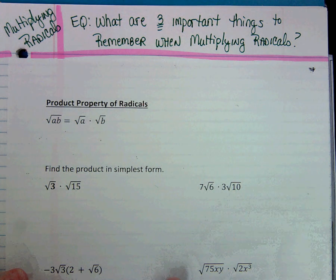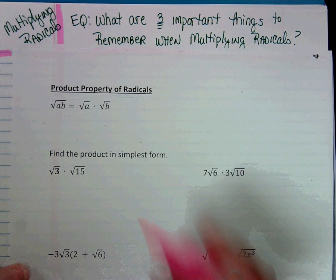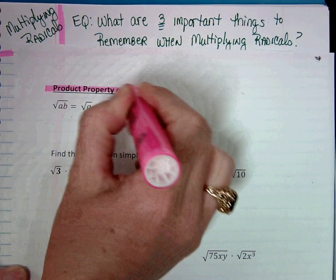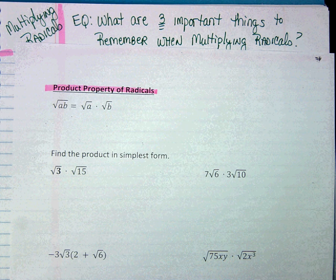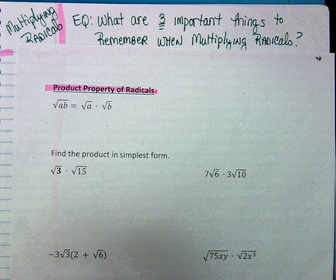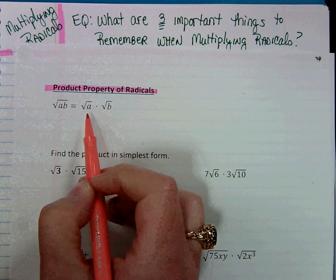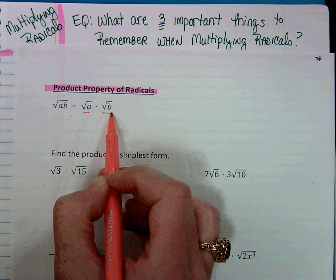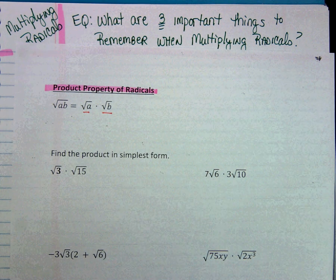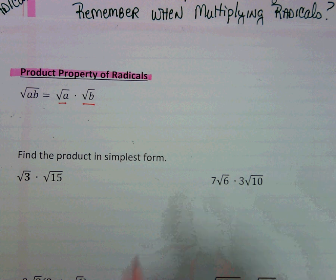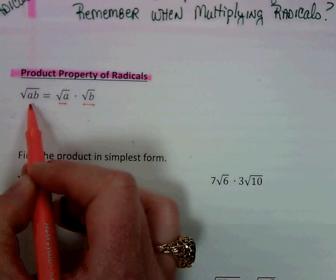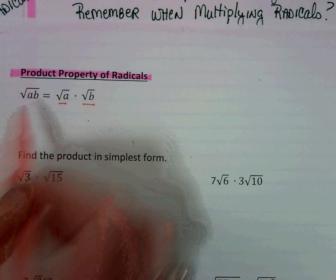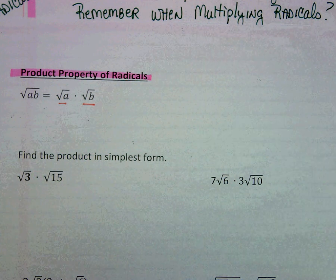The first thing that I have listed on here is the product property of radicals. The product property is telling us that if I have two radicals being multiplied together, then we can actually put it underneath the same radical, or vice versa, you can always split it apart.